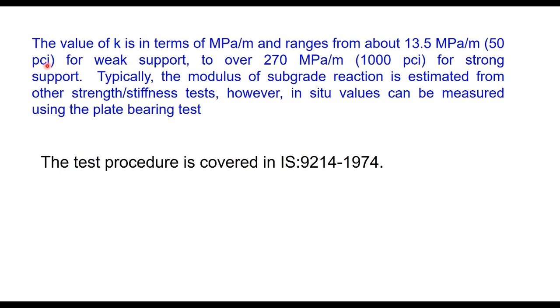The typical value of k ranges from about 13.5 MPa per meter for weak support to more than 270 MPa per meter for strong support. Typically, the modulus of subgrade reaction is estimated from other strength or stiffness tests.